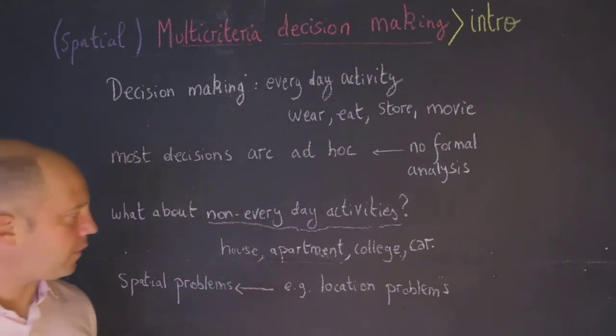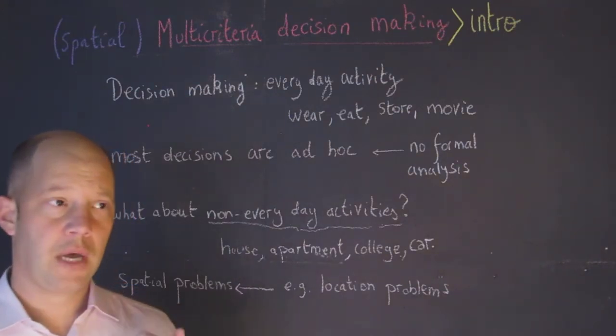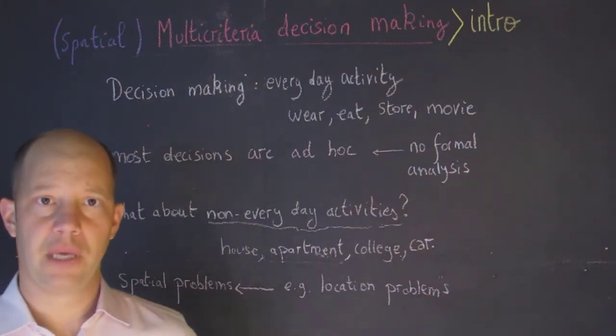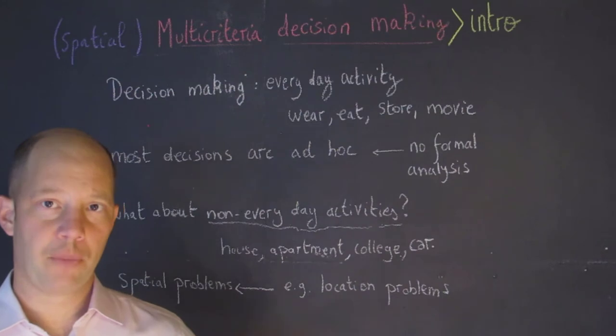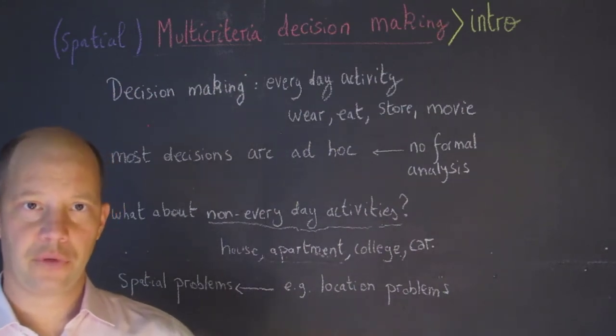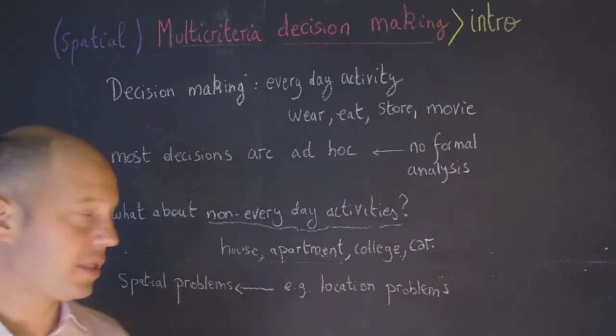When students come to campus and have to rent an apartment, what goes into this decision-making? What criteria or attributes are important, such as maybe the rent, the proximity to the university, proximity to grocery stores and so on.